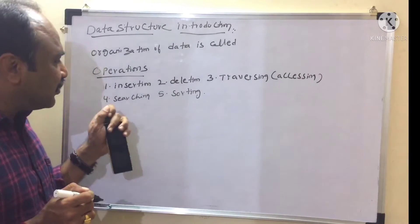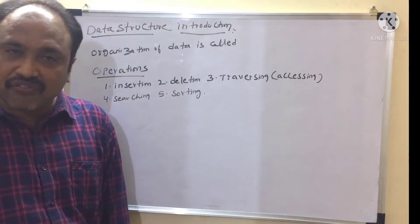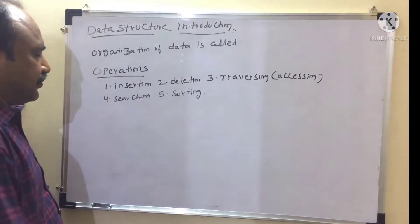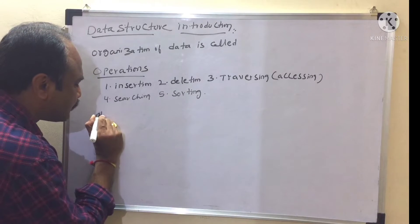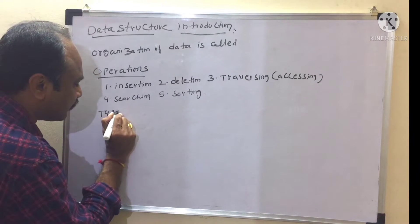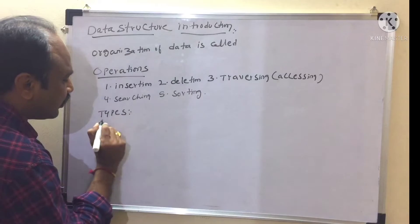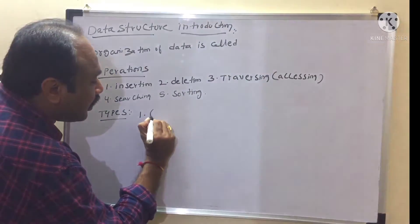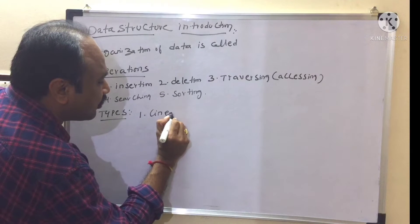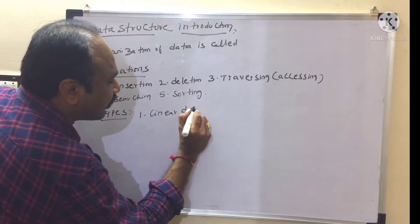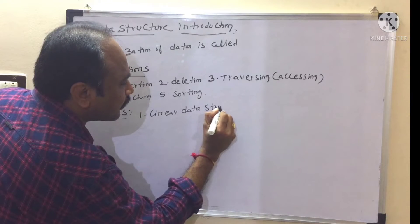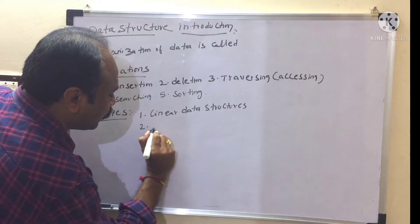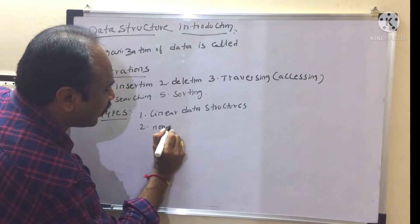Being a data structure it has to allow to perform all these five operations — hence these are referred to as operations of data structures. Next, what are the different types of data structures? We have two types: number one, linear data structures; number two, non-linear data structures.